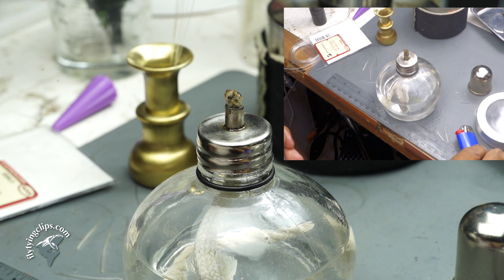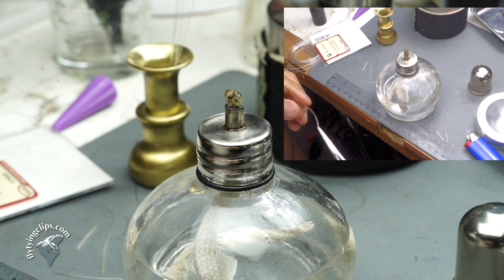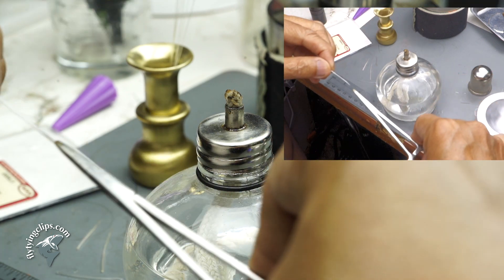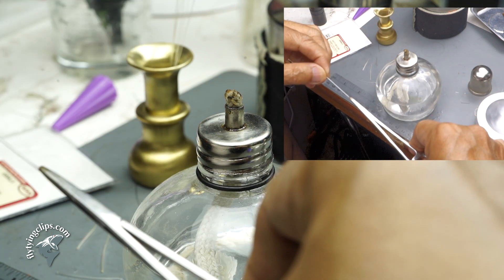What I have here is just a plain old alcohol burner because it burns clean. What you can do is just wave that tubing through it and then you'll feel it stretch.